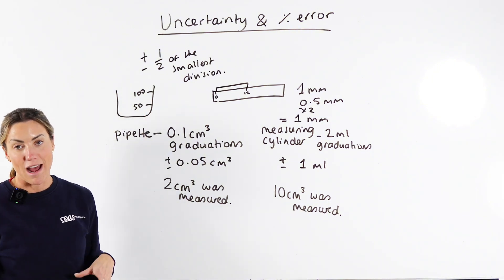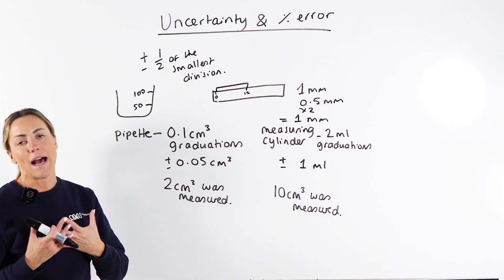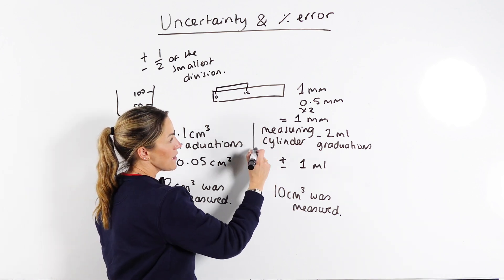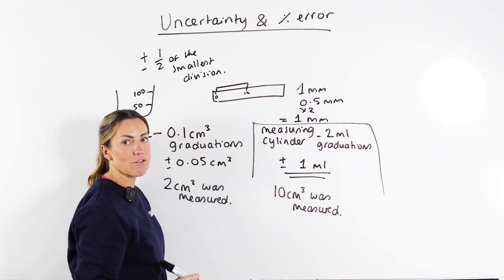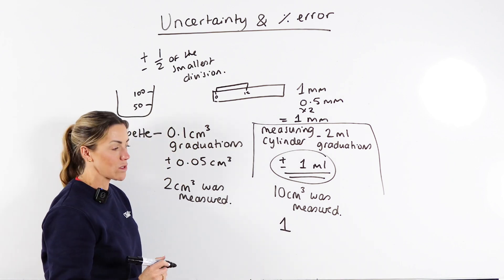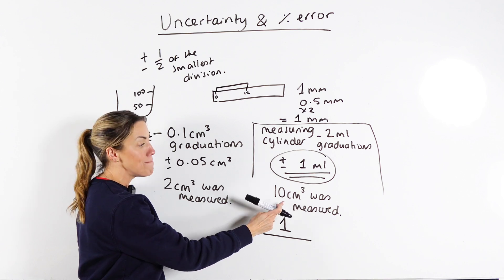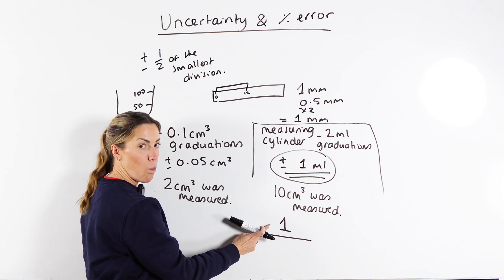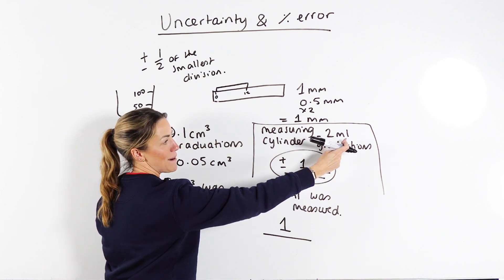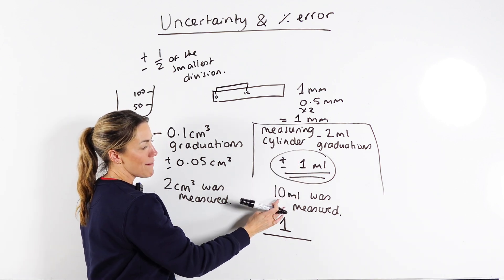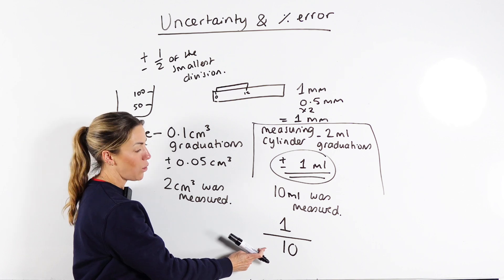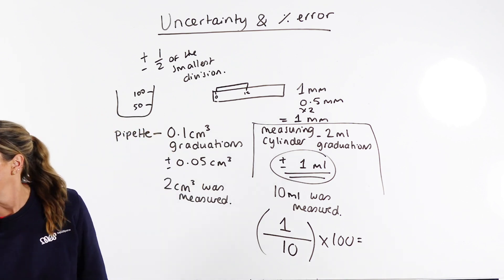Let's get on to percentage error. The way to calculate percentage error, also known as percentage uncertainty, is to take your uncertainty and divide it by the quantity measured, then multiply by 100. With our measuring cylinder that had two milliliter graduations, the uncertainty was plus or minus one milliliter. So if we measured 10 milliliters with that measuring cylinder, we do 1 over 10, then multiply that by 100.